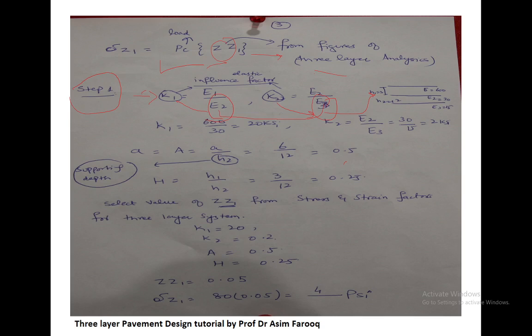The third important parameter to determine ZZ1 is the value of 'a'. The lowercase 'a' of 6 inches must be converted to the capital A, which equals the radial distance divided by the total height of the supporting base layer. So A equals 6 divided by 12 inches, which is 0.5.